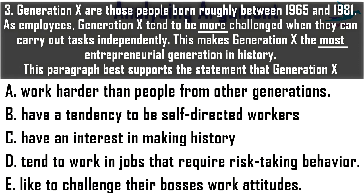Now let's look at the options that describe Generation X best, as per the paragraph. Option A: 'Generation X work harder than people from other generations.' Though this somewhat supports the paragraph, it lacks key information about why they work harder and what motivates them, so it does not support fully. Option B: 'Generation X have a tendency to be self-directed workers.' This statement is very powerful — the phrase 'self-directed workers' explains everything the paragraph wants to convey: that entrepreneurial quality and efficiency when challenged to carry out tasks independently. This is the statement that supports the most.